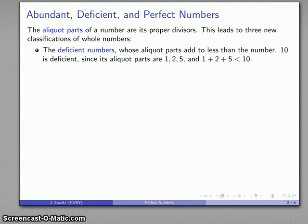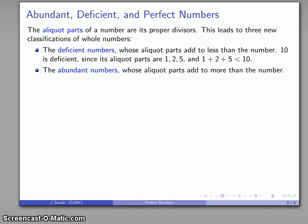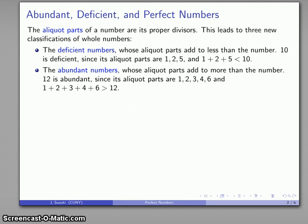If I can have deficient numbers, I can go the other direction and have abundant numbers, where the aliquot parts are more than the number. For example, 12 is an abundant number. The proper divisors of 12 are 1, 2, 3, 4, and 6. And if I add all of those together, what I get is more than 12.